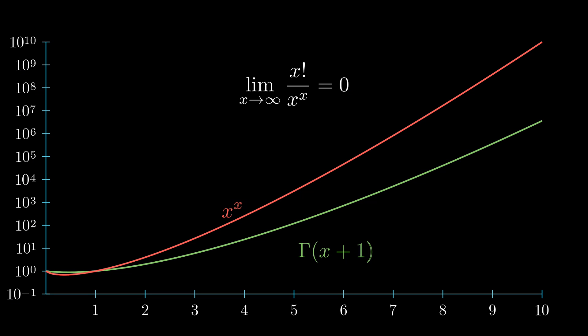If we plot the gamma function and x to the power of x, we can see even in log scale they diverge really quickly.